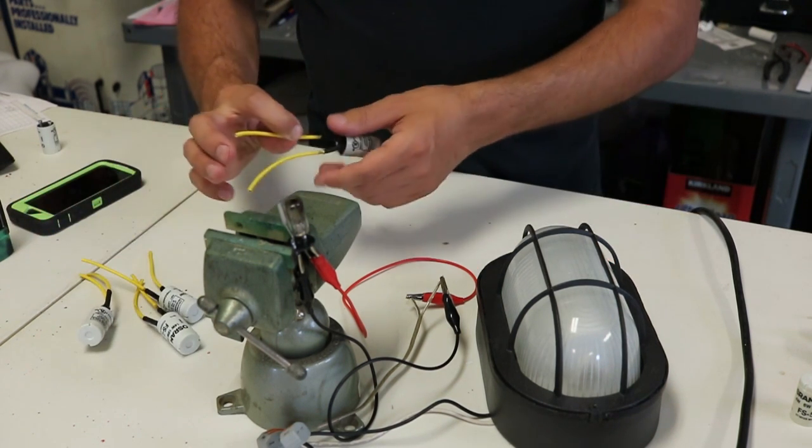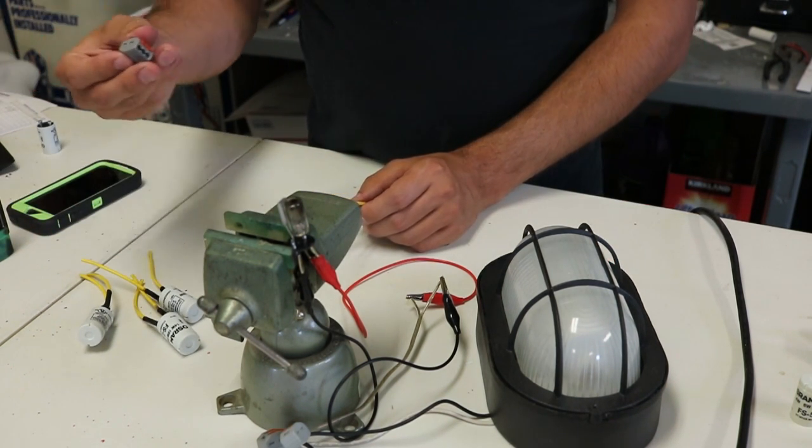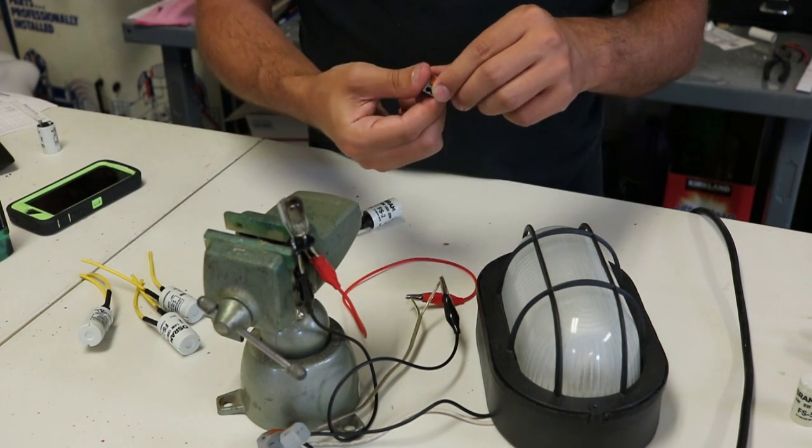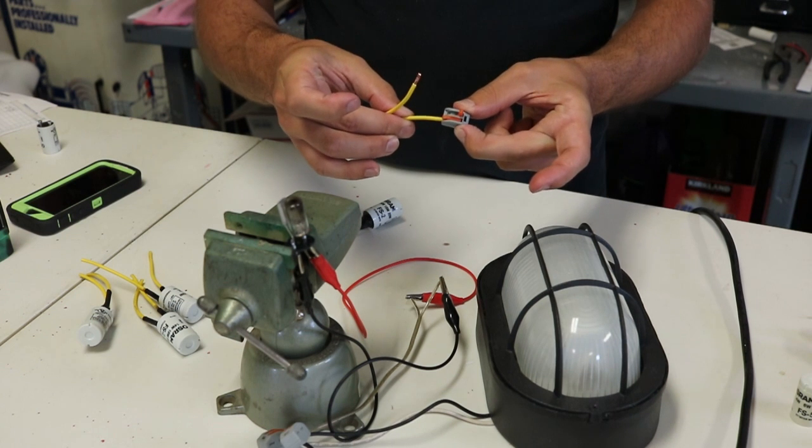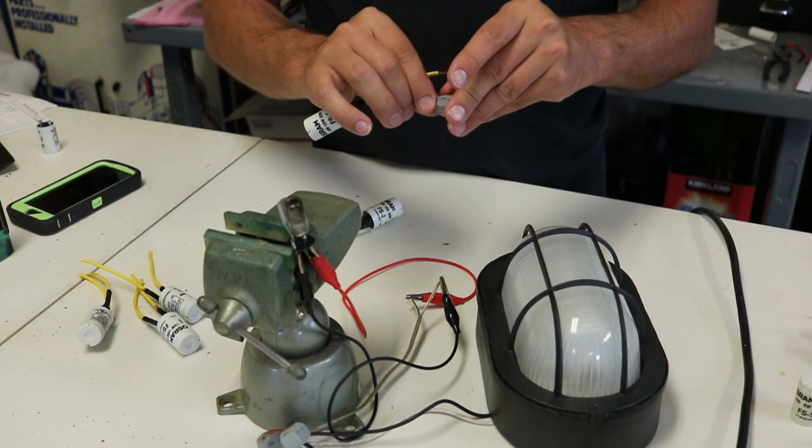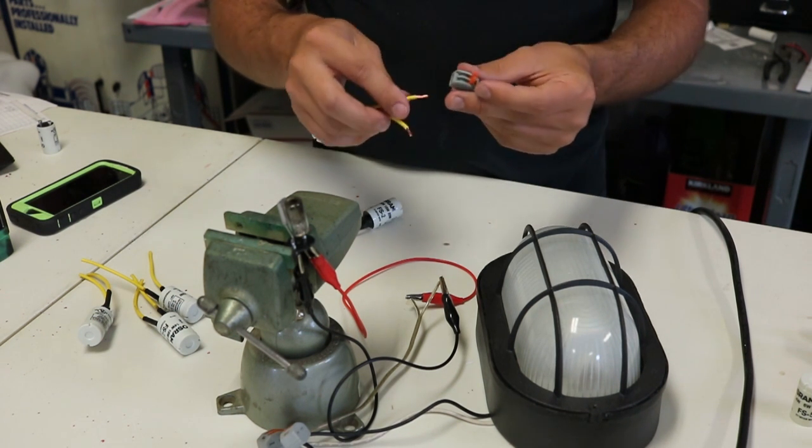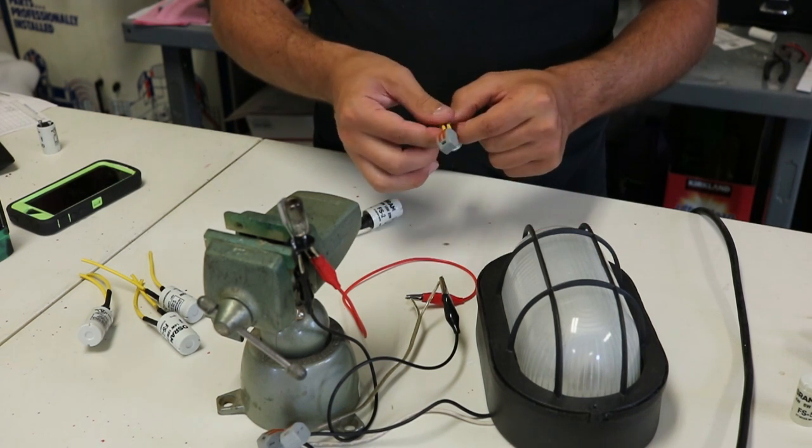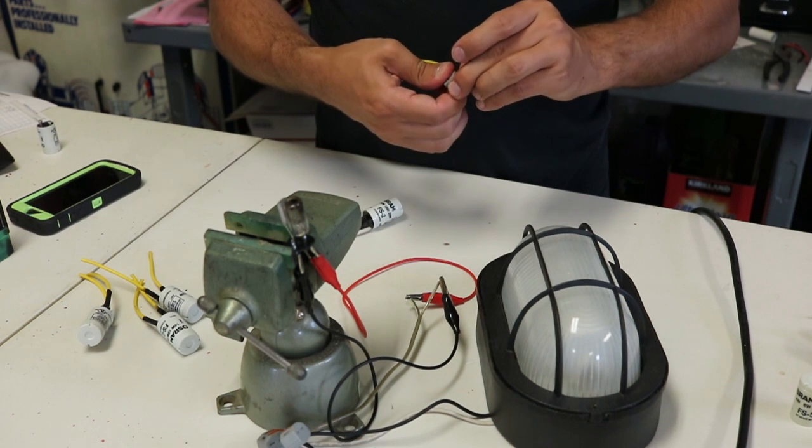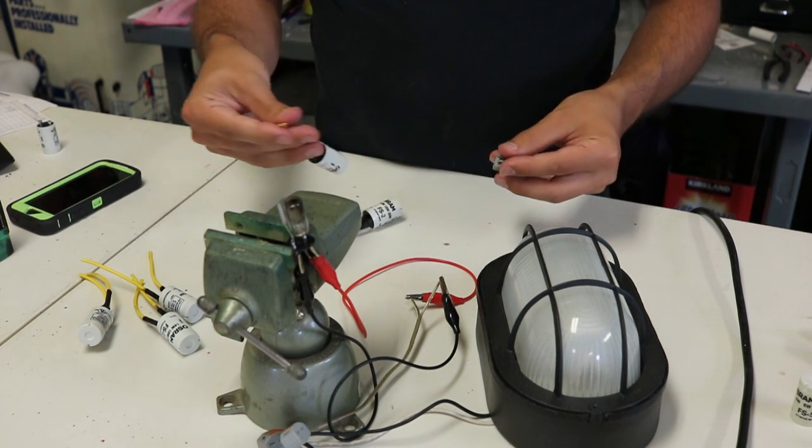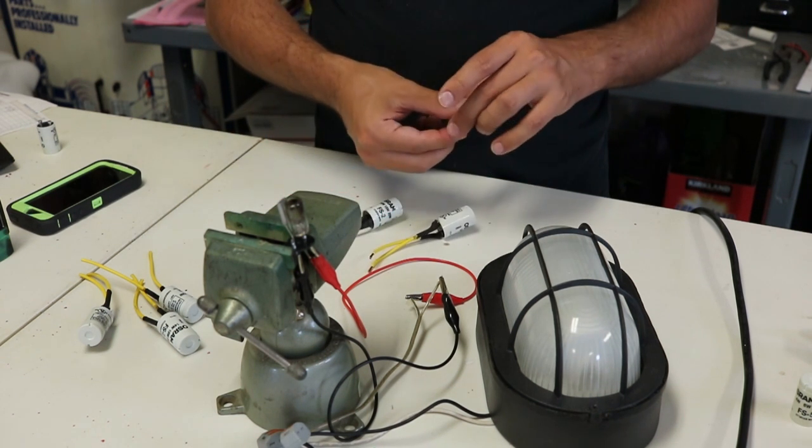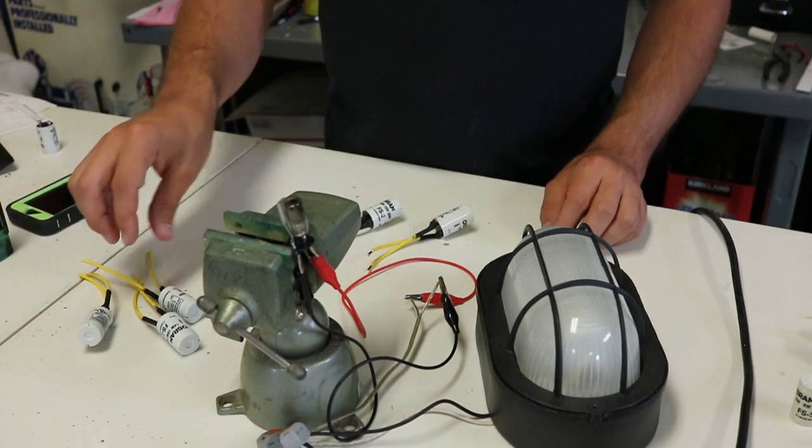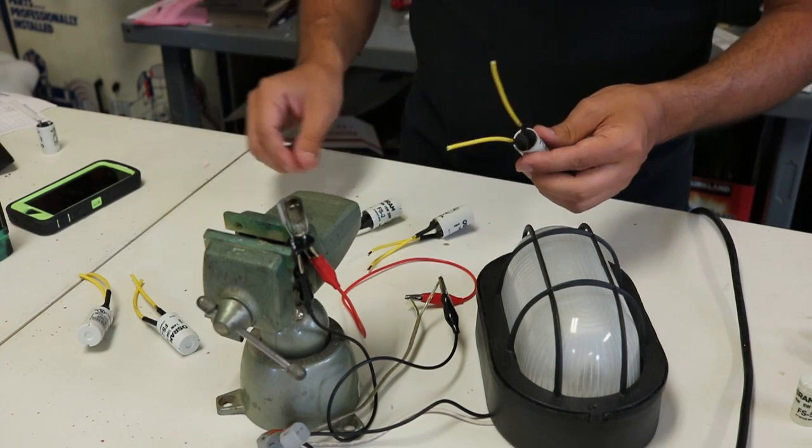I use these Wago connectors. If you don't already use these, you need to because they're amazing. They're basically reusable—like a fancier wire nut. I use them all the time. They're great for mocking up circuits, testing things, or anything that needs to be taken apart later. It's not always best to crimp and solder wires together if you'll be servicing or reusing components.